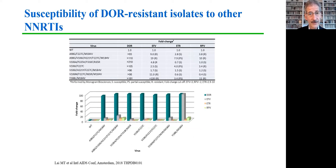Let's turn now to talk about the newest NNRTI, doravirine, and some of the resistance properties we see with this agent. Doravirine is quite effective against viruses that carry mutations common to the other NNRTIs, but resistance to this drug is conferred by mutations at position 227, as well as position 106. And when those are combined with mutations at 221, you can see very high levels of resistance — including not just 106I but also 106M.